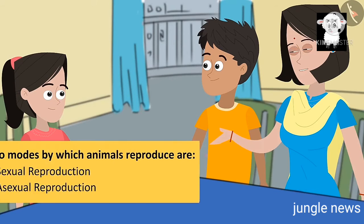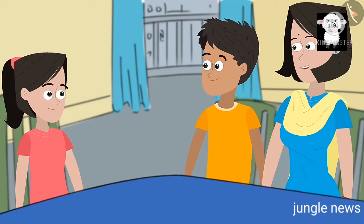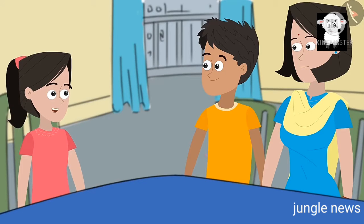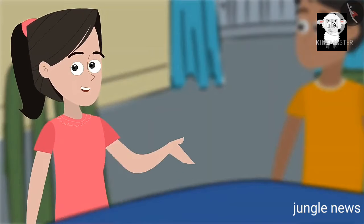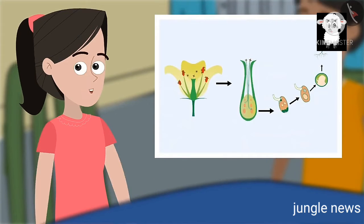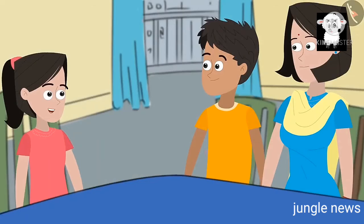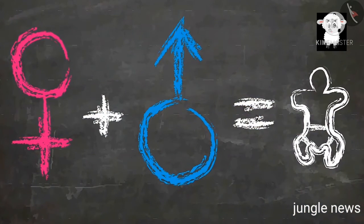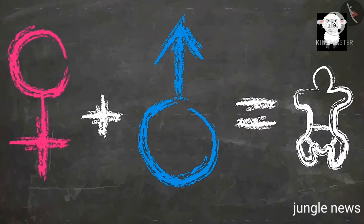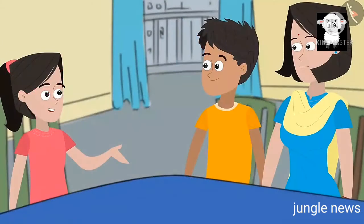Although animals do reproduce using either sexual or asexual modes, reproduction in animals is slightly different than in plants. I am curious to know how. Friends, do you remember how reproduction takes place in plants? Can you list out the parts of a plant that play a role in the same? Mummy, I remember that plants have male and female parts that play a role in sexual reproduction. Do animals have male and female parts too that are useful in the process of reproduction?